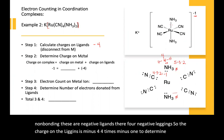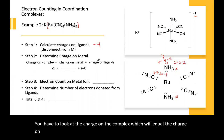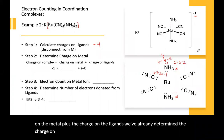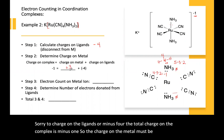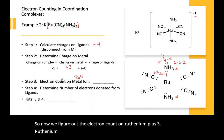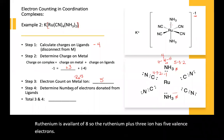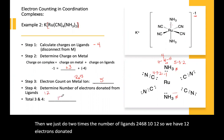To determine the charge on the metal, we look at the charge on the complex, which equals the charge on the metal plus the charge on the ligands. The charge on the ligands is minus four; the total charge on the complex is minus one. So the charge on the metal must be plus three, because three minus four is negative one. Ruthenium has a valence of eight, so the ruthenium³⁺ ion has five valence electrons. Two times six ligands gives 12 electrons donated, plus five — this is a 17-electron complex.